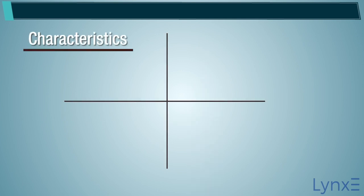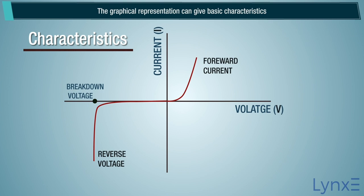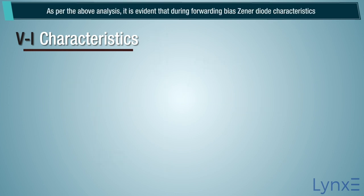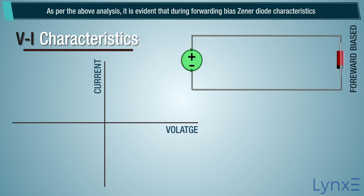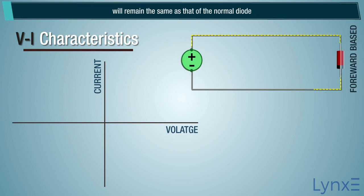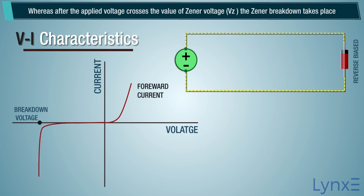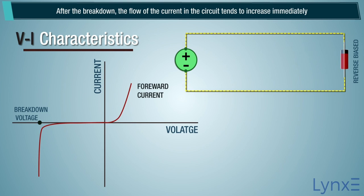The graphical representation can give the basic characteristics, normally termed as VI characteristics. During forward bias, Zener diode characteristics remain the same as that of a normal diode. Whereas after the applied voltage crosses the value of Zener voltage VZ, the Zener breakdown takes place. After the breakdown, the flow of current in the circuit tends to increase immediately.